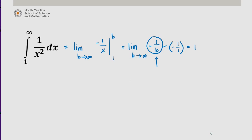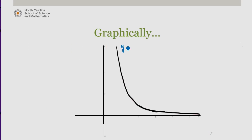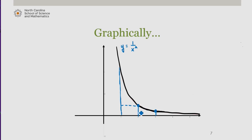Now consider the graphical relationship between this integral and the series from k equals 1 to infinity of 1 over k squared. Here's a graph of 1 over x squared, and we're interested in the area under this curve from 1 to infinity. As before, if we construct rectangles using a right-hand sum with a delta x of 1,